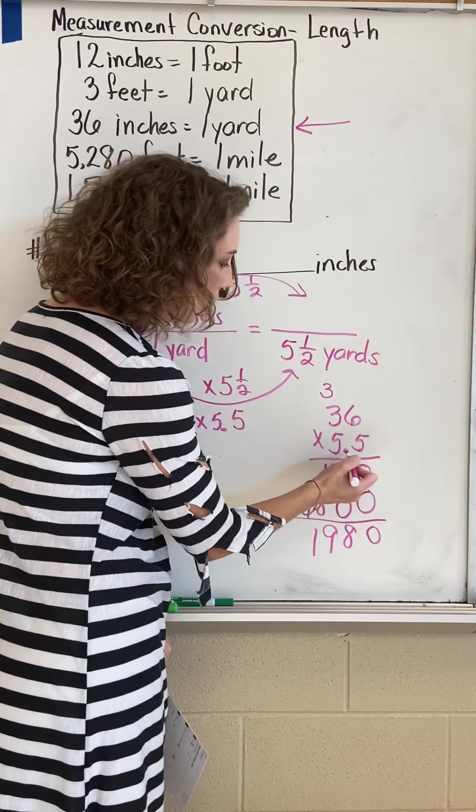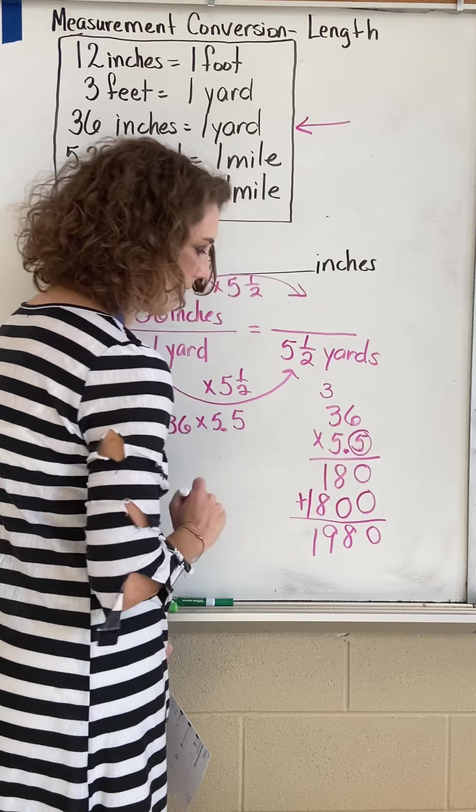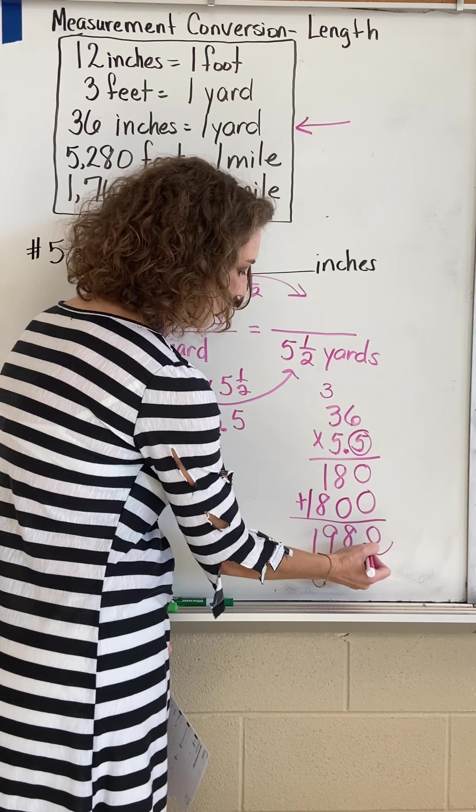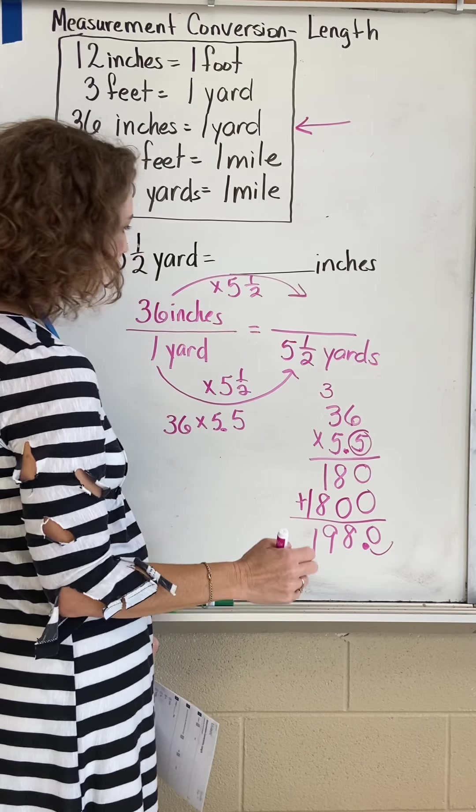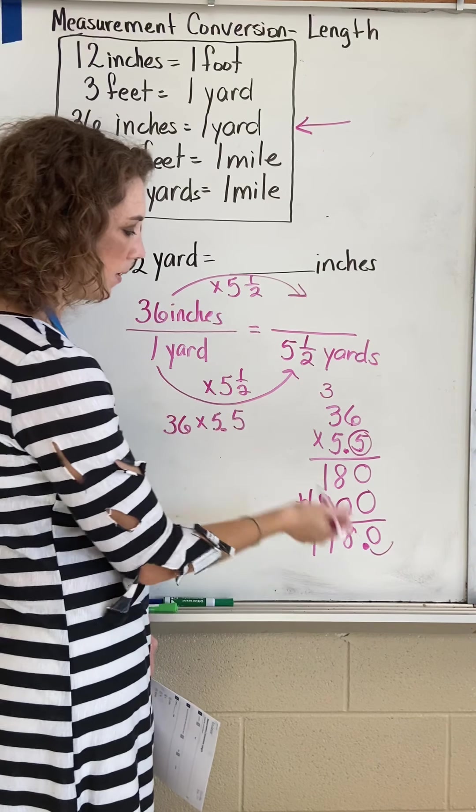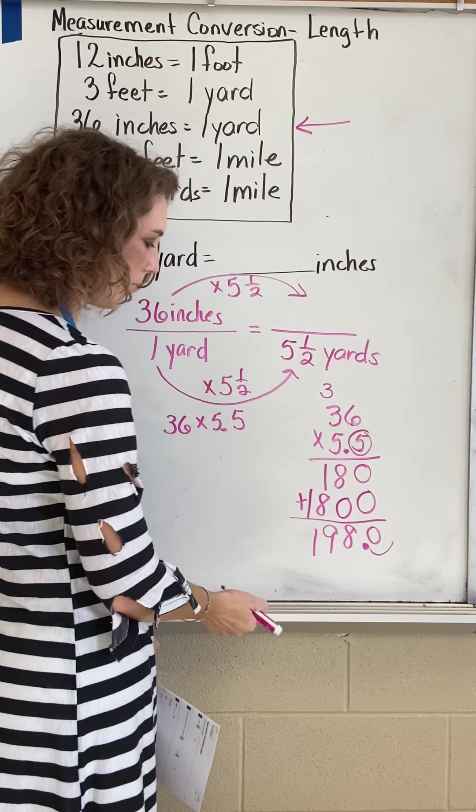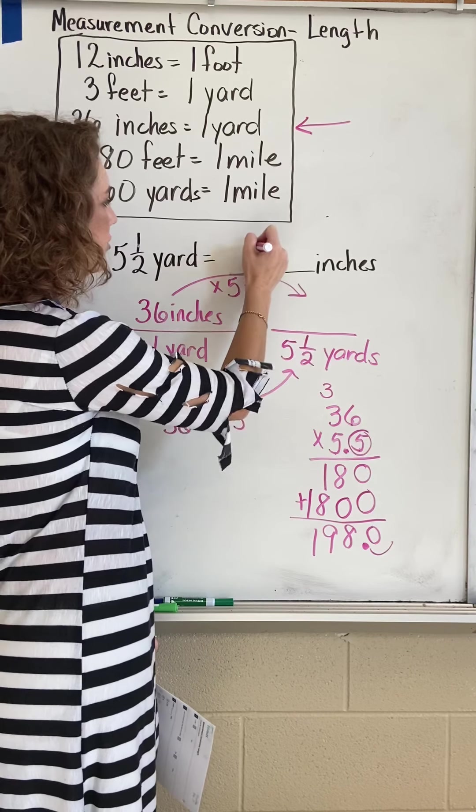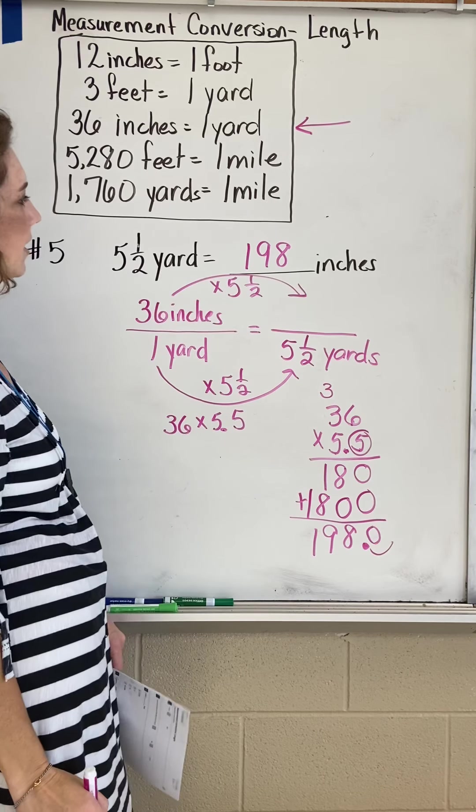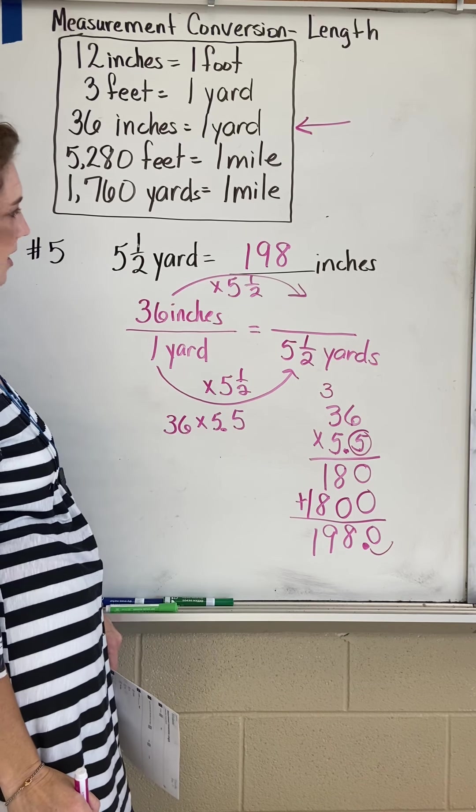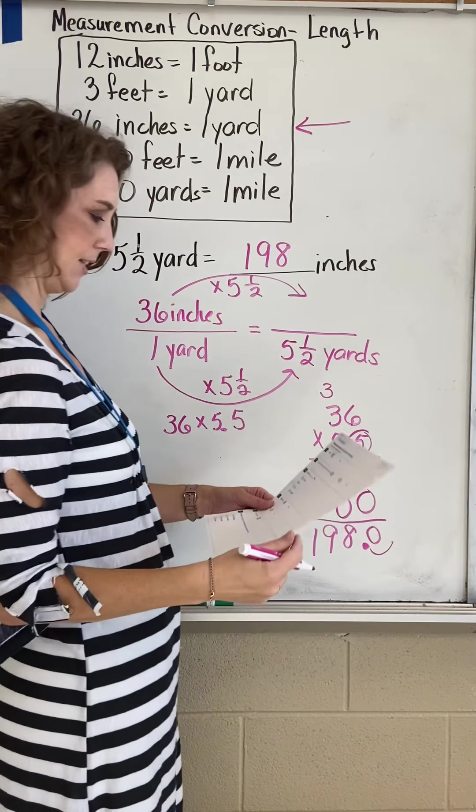We put our decimal in the correct place. Look, there's only one digit behind the decimal, so we move this over. There's only one digit. Actually, we can drop that zero because it holds no value right there, and we just put 198 inches.